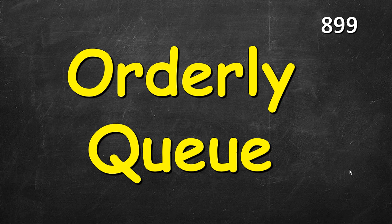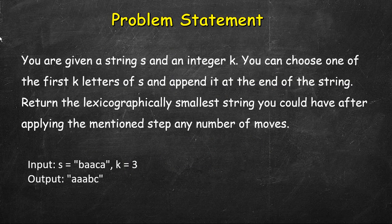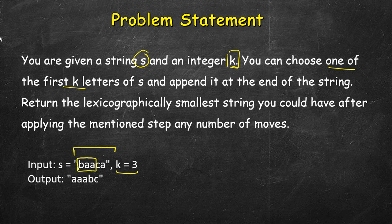In this video we will solve Orderly Queue. The problem statement says you are given a string s and an integer k. You can choose one of the first k letters — for example, with 'baaca' and k=3, among the first three letters you can pick one and move it to the end.